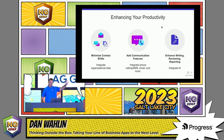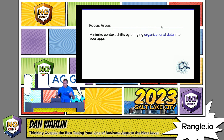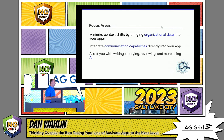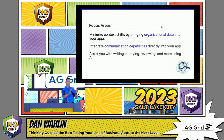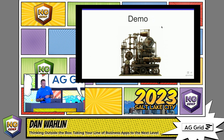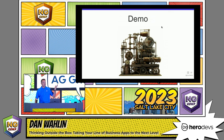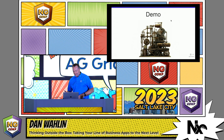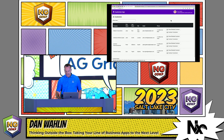So these three categories: the one on the left is organizational data, the middle is communications, and the right is AI. We're going to talk about how to minimize context shifts and tap into this gold mine of data that most companies have. How do we integrate communication capabilities? And how do we help with writing, or even convert natural language to something else? I went to Midjourney for images — I asked for something representing a demo with pipes and gauges, and this is what it made. I have no idea what that machine is, but apparently it's very complex.